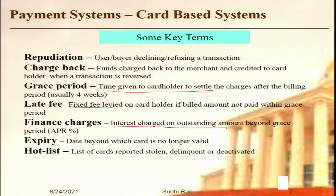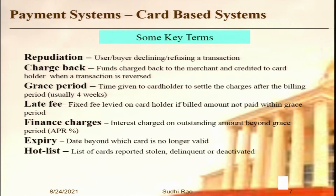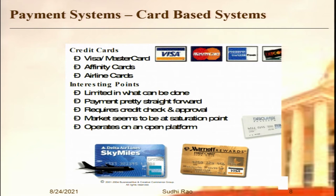Expiry is the date imprinted on the credit card beyond which the card is not valid — the credit card company normally issues a new card for the period beyond. Hot list is a list constantly shared between the credit card association, banks, and merchants of cards that have been damaged, reported stolen, or invalid for some reason. If my card gets stolen, I have up to 24 hours to report it to the bank or credit card company. They immediately invalidate it and circulate it on the hot list. Whenever a merchant swipes a card, the system first checks the hot list to see if the card has been invalidated. In many countries, if a merchant notices the card is hot listed, they are required to destroy the card immediately.